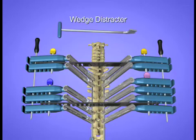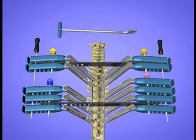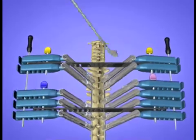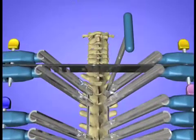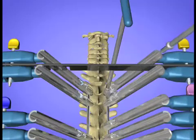In a tight space, for example, the concave side of the left upper thoracic curve, a wedge distractor can be used between the two right concave side derotators. The wedge distractor is inserted down to the rod and angulated longitudinally.